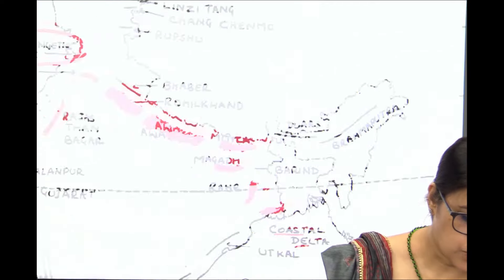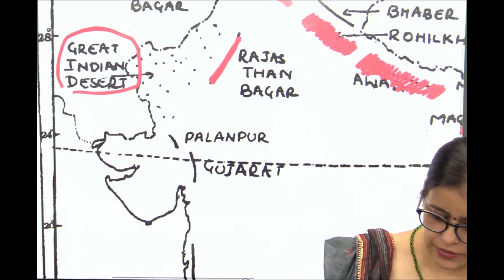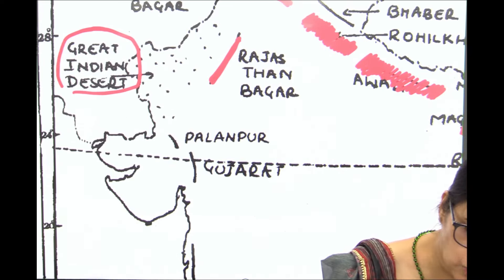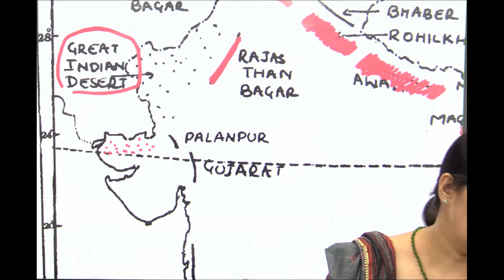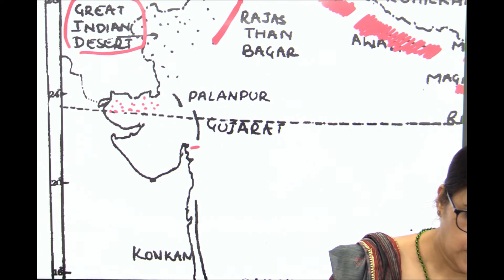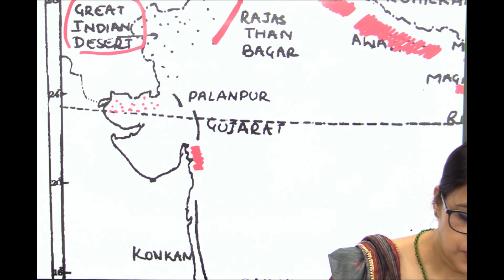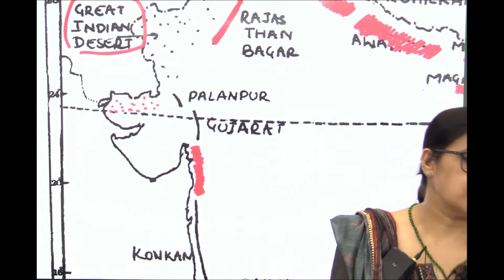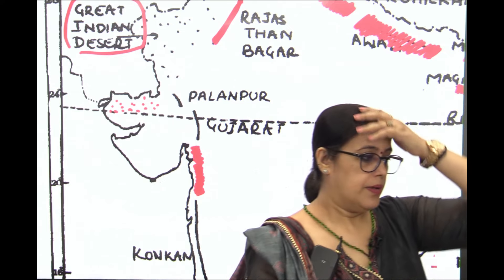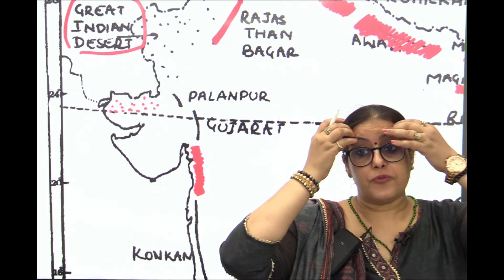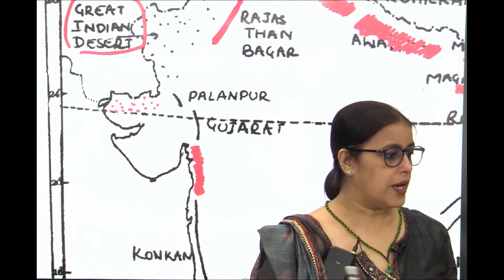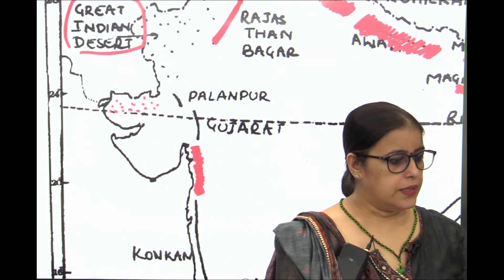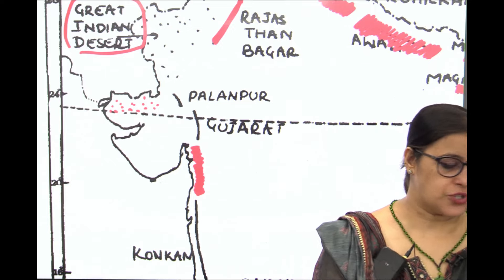Now you will be marking the Gujarat plains. I will advise you to mark Gujarat plains as Kutch plains, better marked up as dots, the way we have marked the Great Indian Desert. And right here, Khambat plains. Can you remind me what were the characteristics of Khambat plains? Delta of Sabarmati, Mahi, and estuarine mouths of Narmada and Tapi.